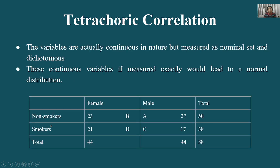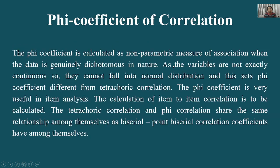ध्यान देने वाली बात सिर्फ ये है: variable continuous in nature होने चाहिए, nominal scale में measure होने चाहिए, और normal distribution को follow करना चाहिए। अब phi क्या है?